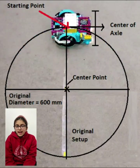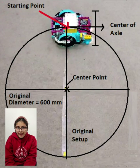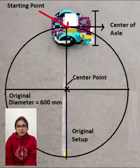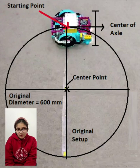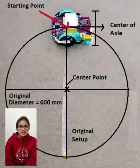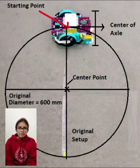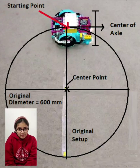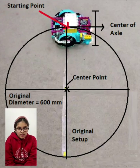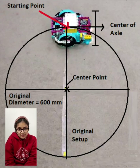Hello everyone. Today I am going to show you how straight speed and straight accelerations affect the accuracy of the circumference of a circle, both in terms of distance and angles using fibricks. Here is my experimental setup. The diameter in my experiment was 600 millimetres in all the runs.